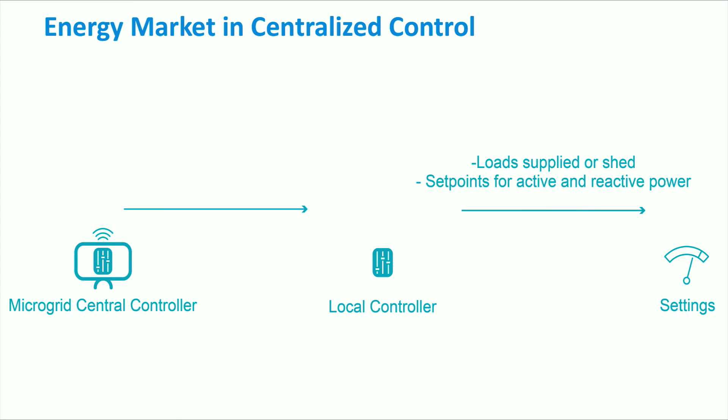The decisions about the operation of the distributed generators are taken at the internal microgrid control level. For that, the microgrid central controller is equipped with optimization and scheduling routines. The purpose is to optimize the operation of the distributed generation units in order to serve the microgrid's own needs, using the grid when optimal and participating in the market to maximize profits.